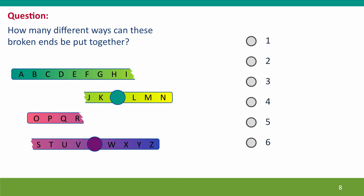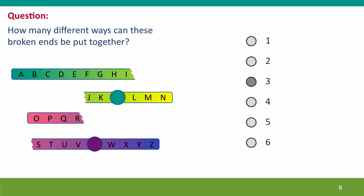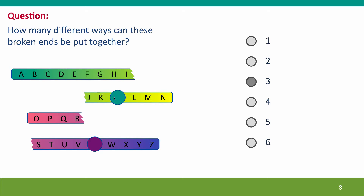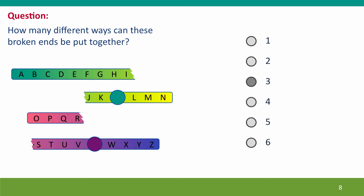Here's a question: given two chromosomes each of which has undergone one break, how many different ways can these broken ends be put together? Three ways. Assuming all the ends are joined, they can be put back together in their original orientation — that one with that one, and that one with that one. They can be put together in an incorrect but functional orientation — swapping the partners. Or they can be put together in a really wrong orientation, which would connect ends from different chromosomes, resulting in one chromosome with two centromeres and another chromosome with no centromere.